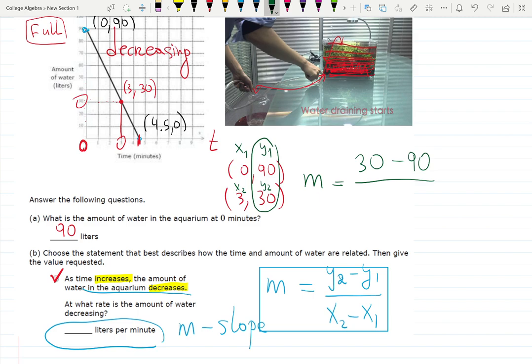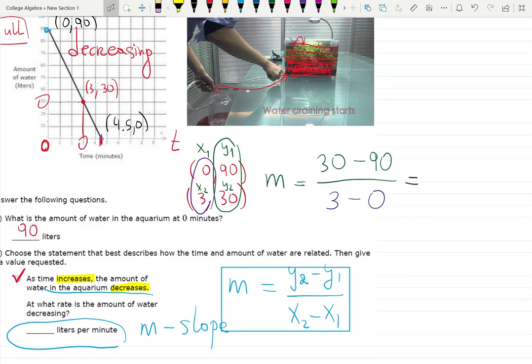Second output minus first output will be 30 minus 90, not the other way around. You always choose the second point first. Change in input: second input minus first input, 3 minus 0. And the answer should be negative, you will see that. So 30 minus 90 is minus 60 over 3, and indeed it is negative.